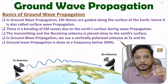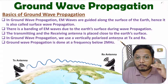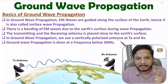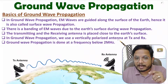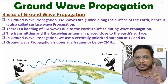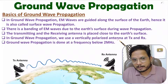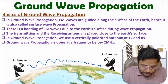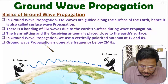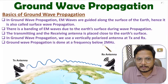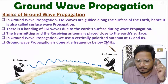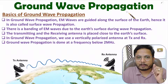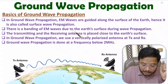In ground wave propagation, we transmit a vertically polarized signal because there will be higher attenuation of the horizontal components of the electric field near the earth's surface, as earth has its own magnetic field. Ground wave propagation is kept up to 2 megahertz of frequency, and the majority of applications fall below 2 megahertz.